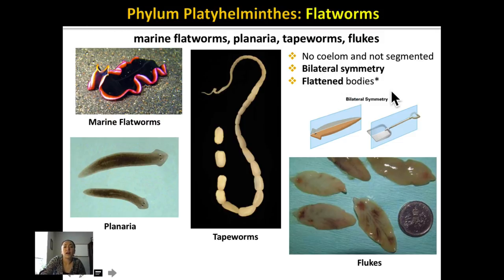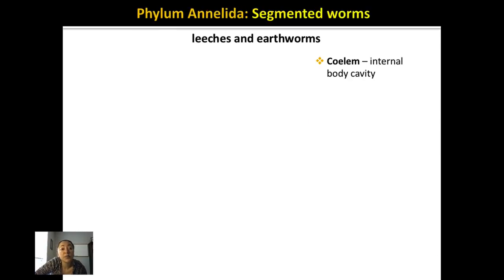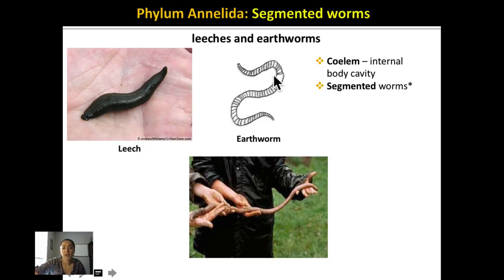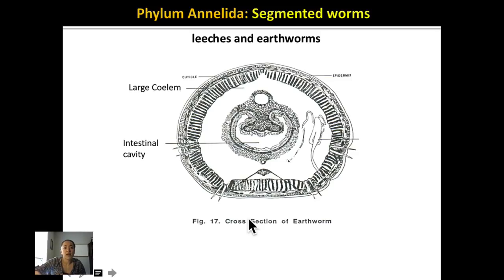Flatworms have bilateral symmetry, which is shared by other animals including humans. Next we have phylum Annelida — annelida means segmented worms. This is our first animal phylum that has a coelom — an internal body cavity. Annelids include leeches, which have obvious segmentation all over their body, and earthworms, which are also highly segmented. A cross-section of an earthworm shows the large coelum surrounding the intestinal cavity. This large body cavity provides cushioning and allows more complexity in their structure. In Australia there are earthworms that can grow as long as five to six feet.